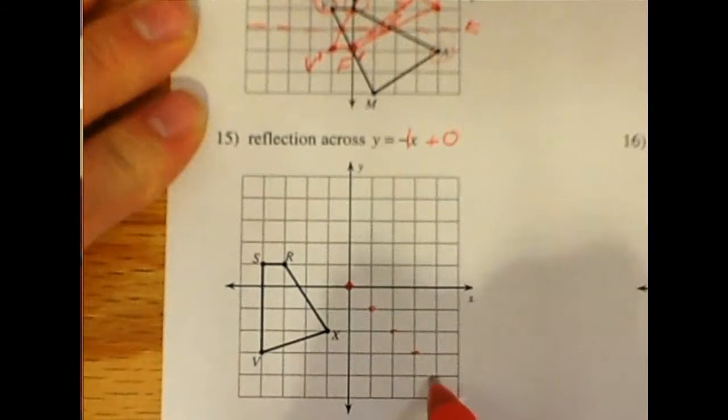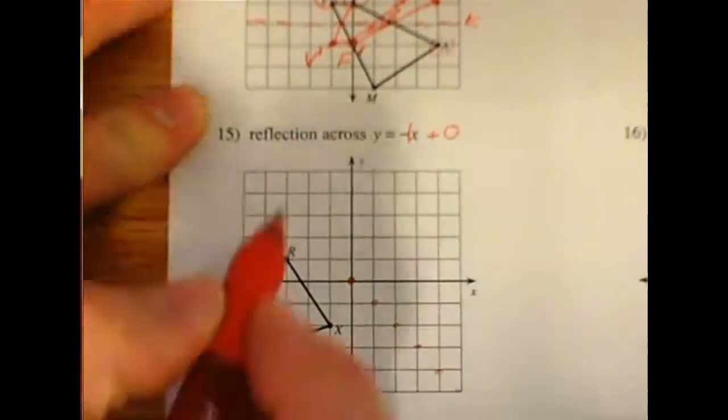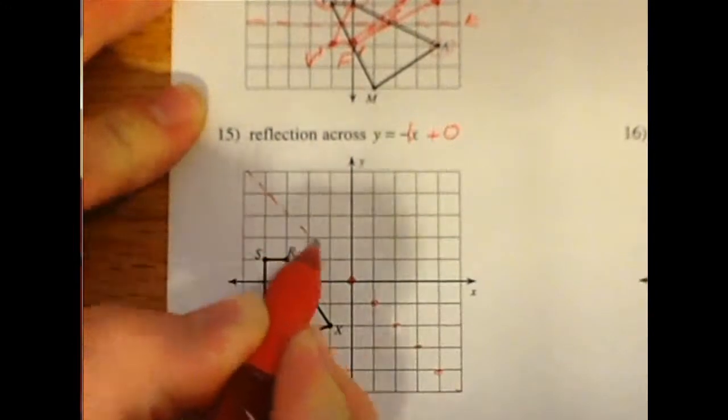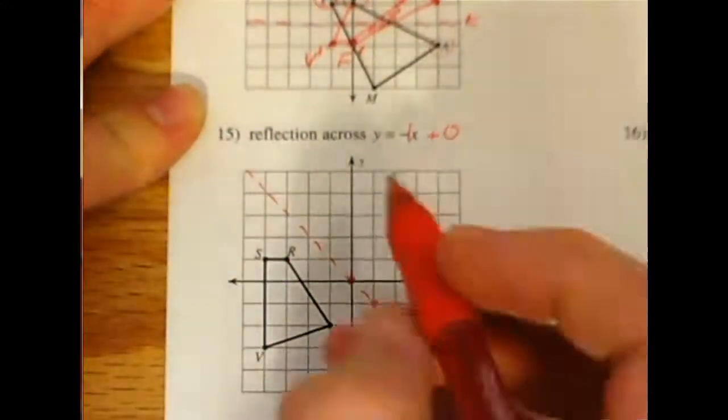This is going to be a diagonal line. And the negative x means you're going to have a slope that's going negative or down. So if you were to draw your dash line across the graph, it would look something like this.